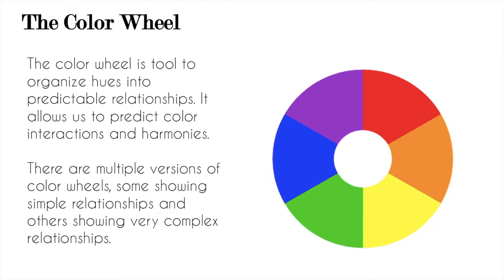So let's start with the color wheel. This is very basic, so I'm guessing many of you have seen it before, but the color wheel is a tool we're going to start using in class. The basic idea is that it's a way to help organize colors into predictable relationships. It allows you to understand color harmonies and color theory. There are multiple versions of the color wheel — some show simple relationships, some show complex relationships. We're going to work on the 12-step color wheel. This one here is six — there are six different colors — and we're going to build up to a 12-step color wheel.